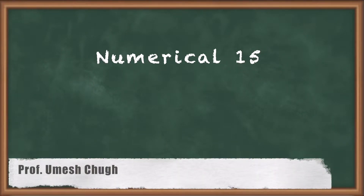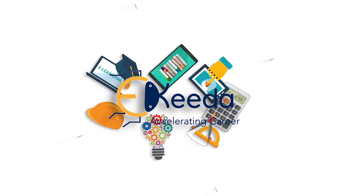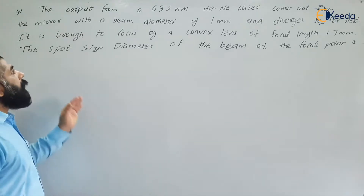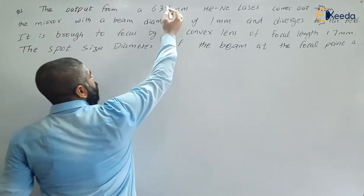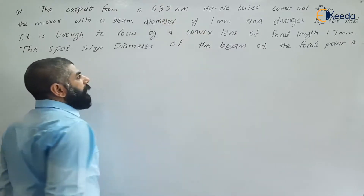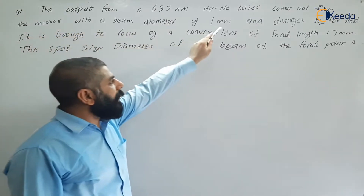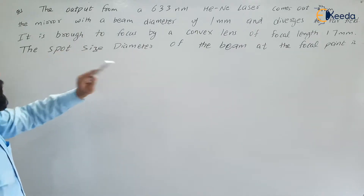Hello students. In this video I am going to discuss a numerical based on divergence angle. The problem states that the output from a 633 nanometer helium-neon laser comes out from the mirror with a beam diameter of 1 mm, and now diverges to far field.